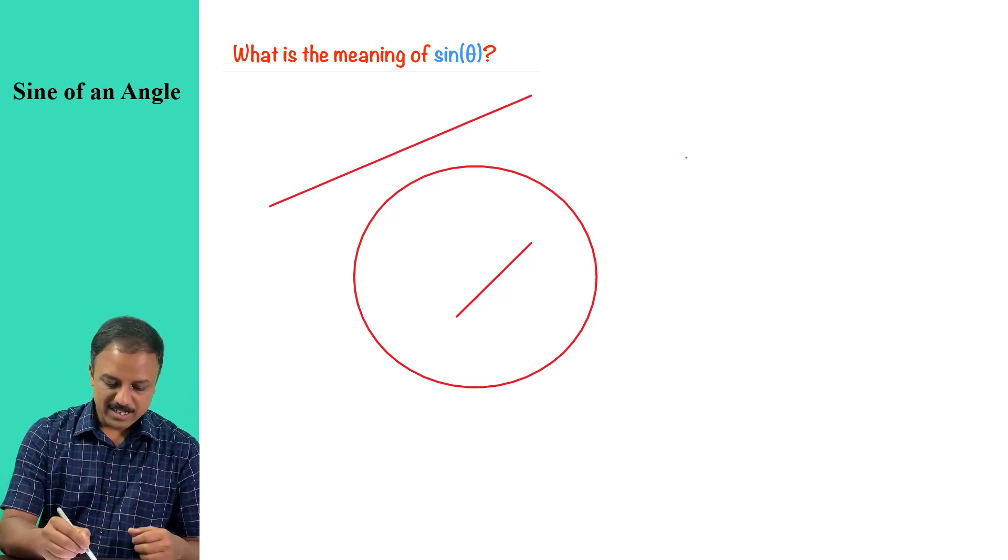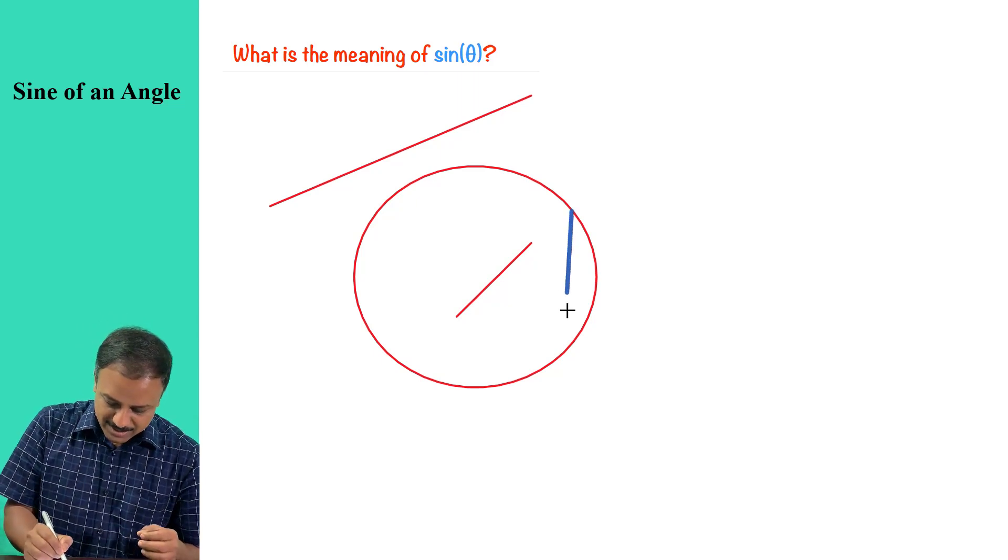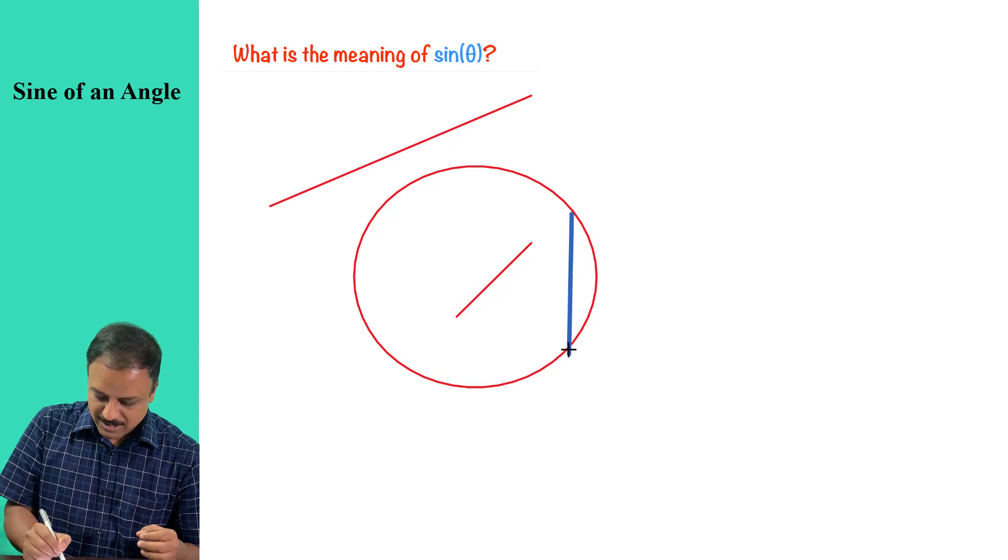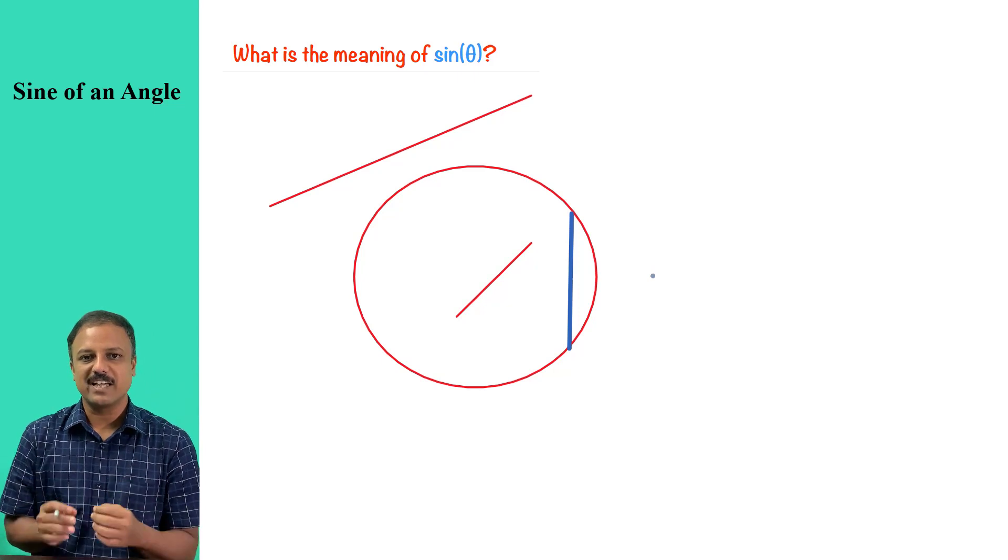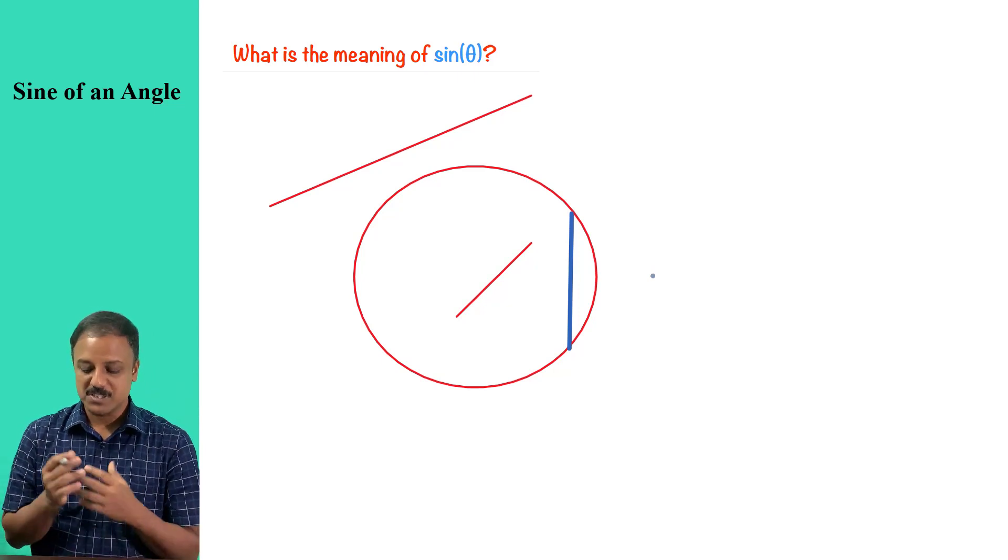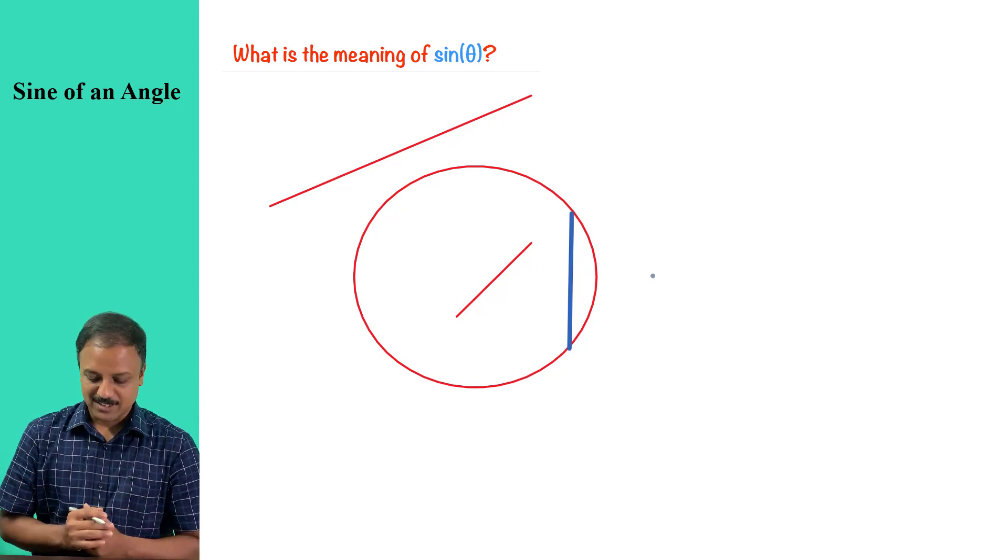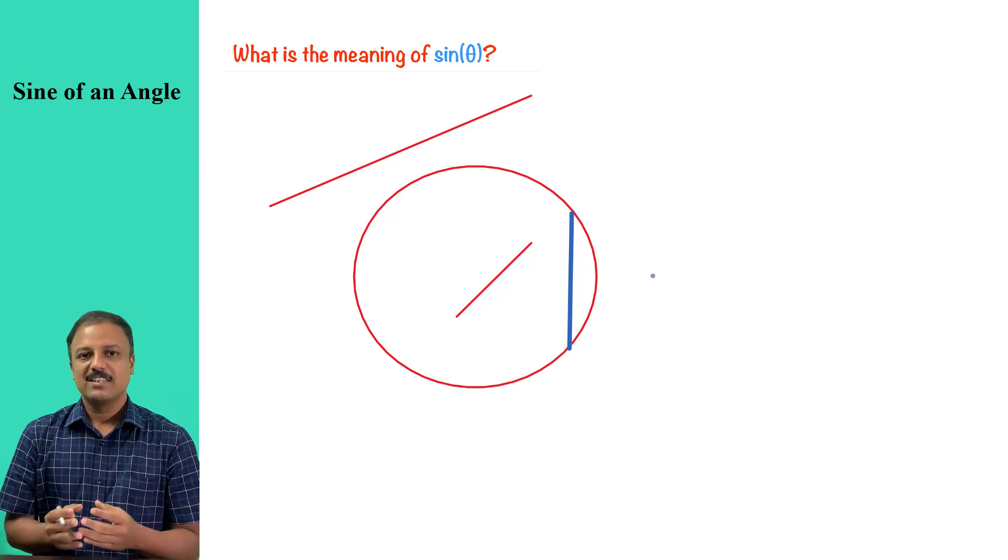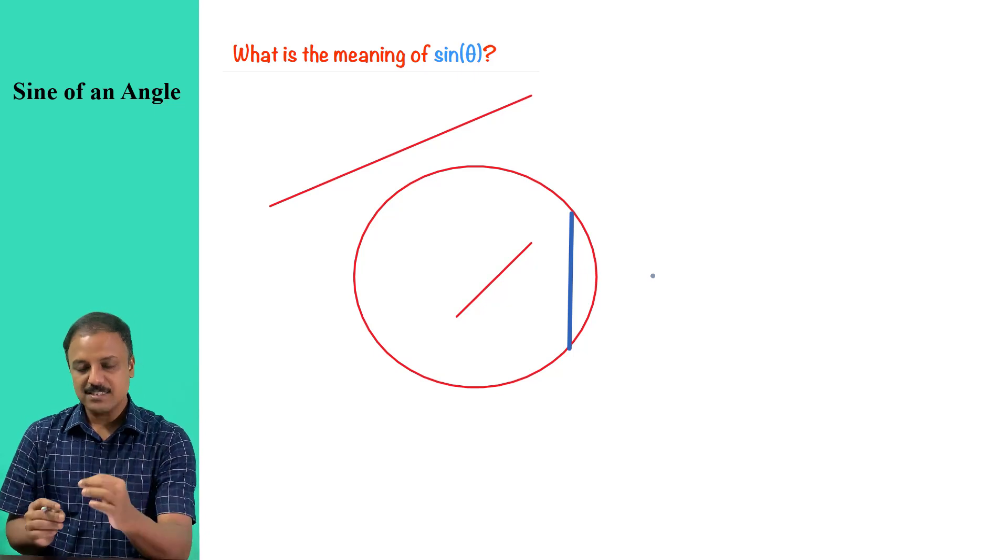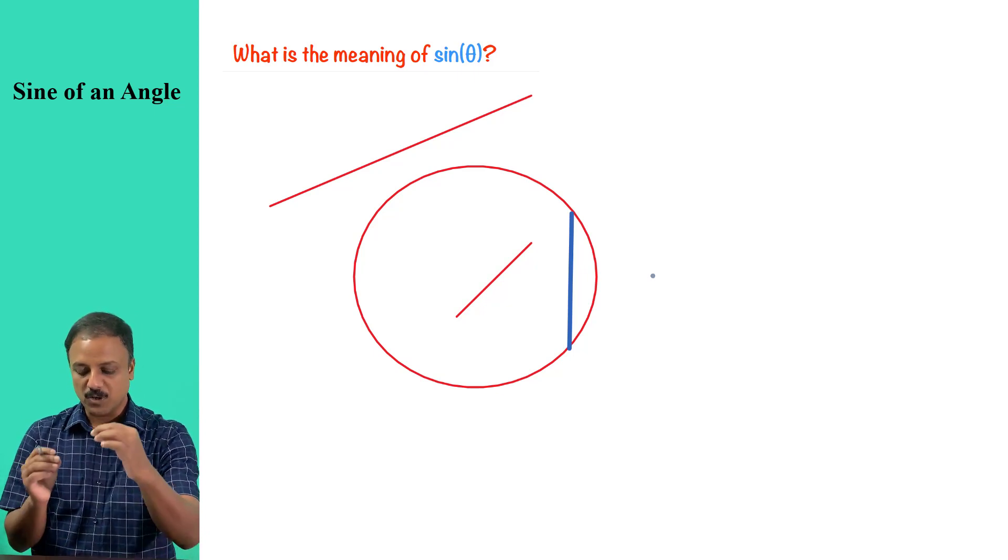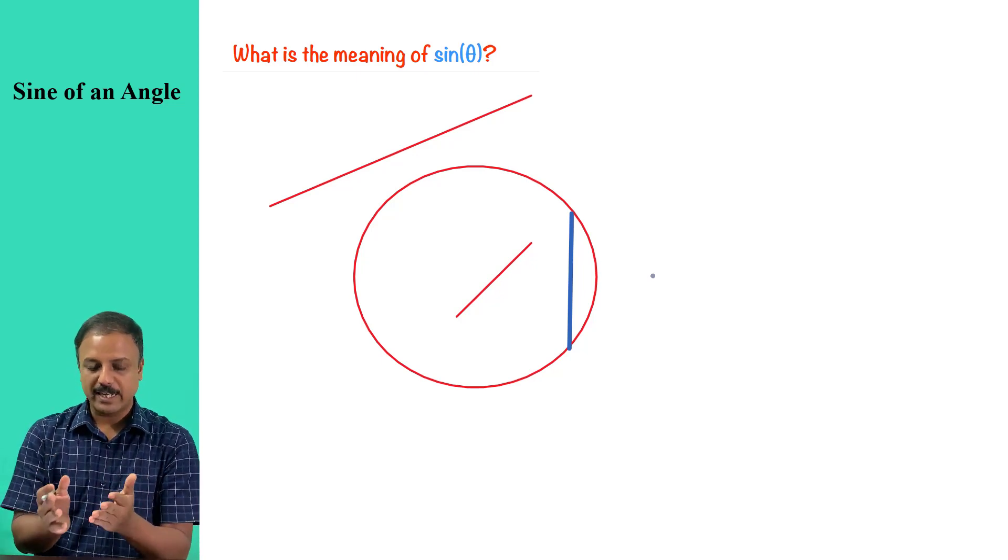But if I draw a line something like this, now I would say yes, there is a relationship between this line and the circle. Now, what is that relationship? Because now I call this line as chord. It is a chord length. It is a line segment where the endpoints lie on the circumference of the circle. So when the line touches that circle, if the endpoints of the line touches a circle or if the line touches a circle, then I do have a relationship between the line and the circle.